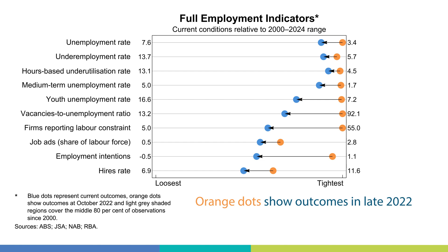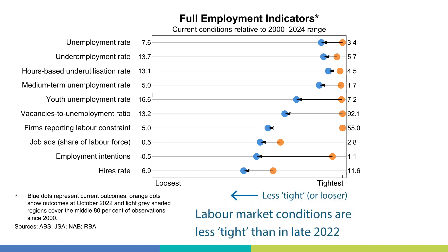Some of these are shown in this graph. If we focus on the orange dots first, they show labour market outcomes in late 2022, which was when many of these measures were around their tightest levels. The blue dots show the latest available data for these same indicators. The main thing to take away is that the blue dots, or most recent data, are to the left of the orange dots, suggesting that labour market conditions are less tight than in late 2022.